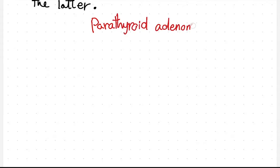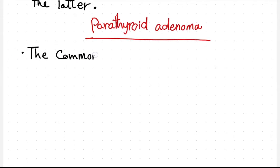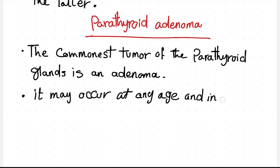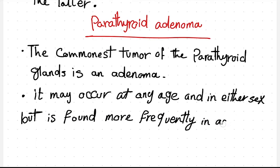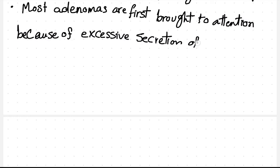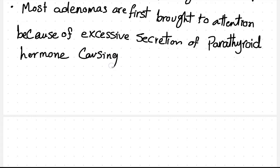Parathyroid adenoma. The commonest tumor of the parathyroid glands is an adenoma. It may occur at any age and in either sex, but is found more frequently in adult life. Most adenomas are first brought to attention because of excessive secretion of parathyroid hormone, causing features of hyperparathyroidism.